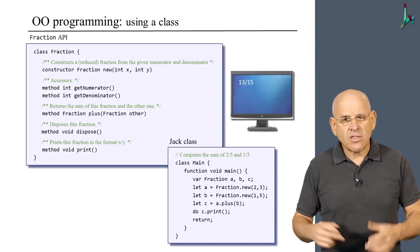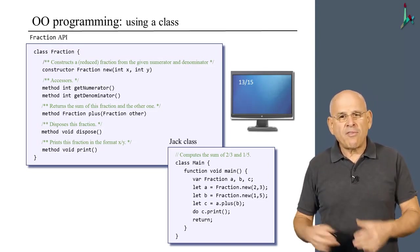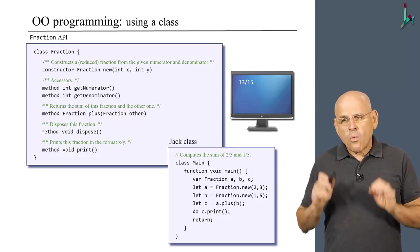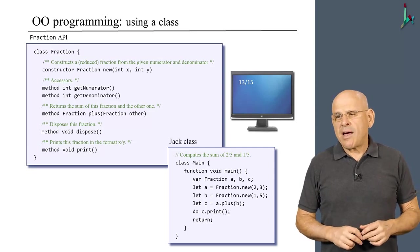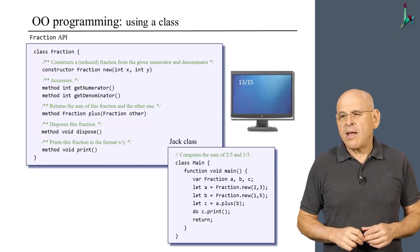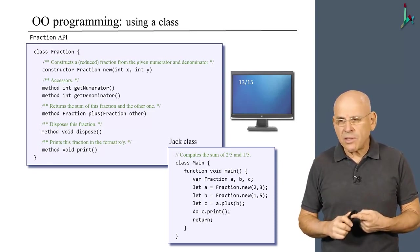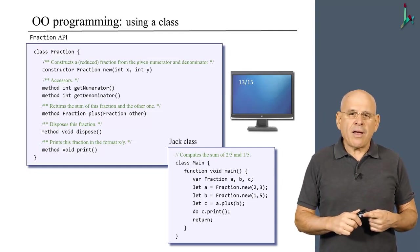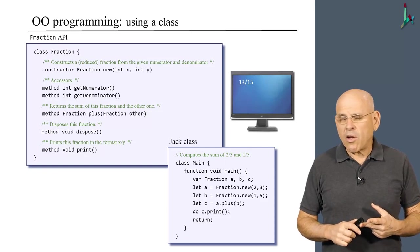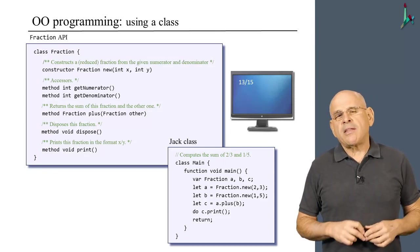So at the end of the story, when we execute this program, we're going to get 13 over 15, which hopefully is the sum of two-thirds and one-fifth. What I'd like to do next is focus on every one of the activities that we did here in some details. So we'll talk about object construction. We'll talk about methods that manipulate the current object. And we'll talk about object destruction.